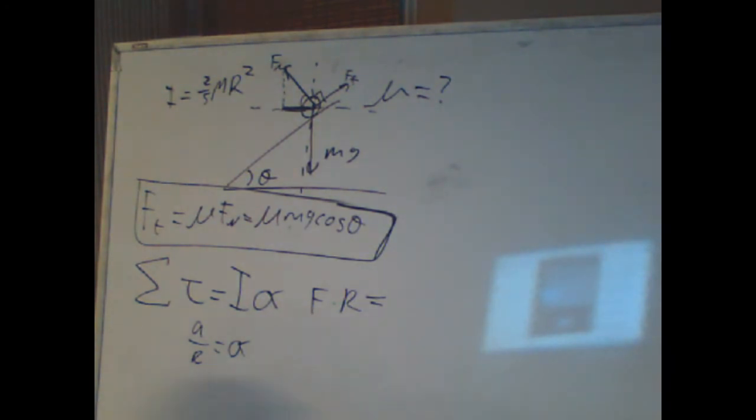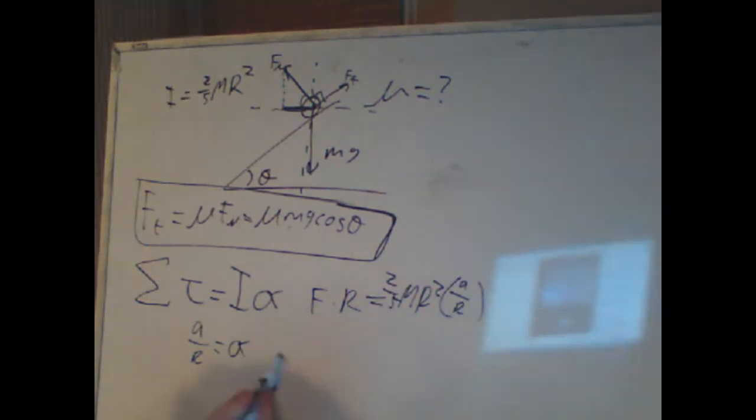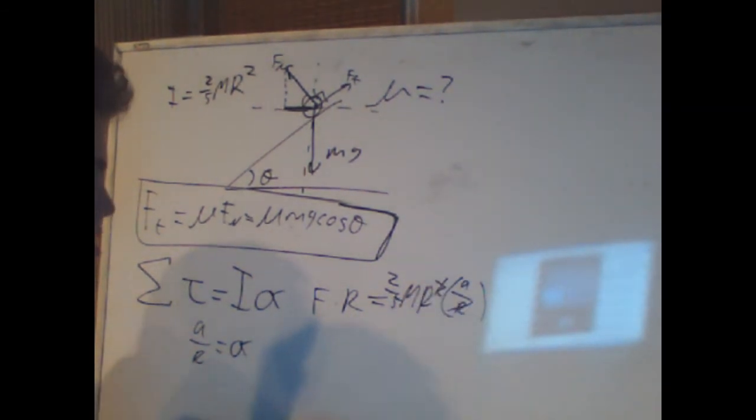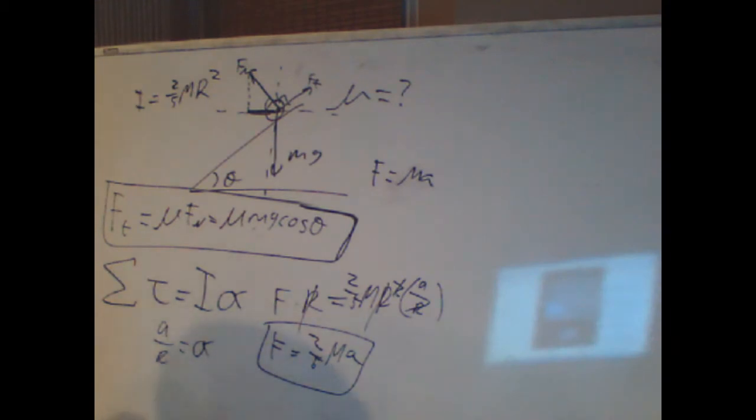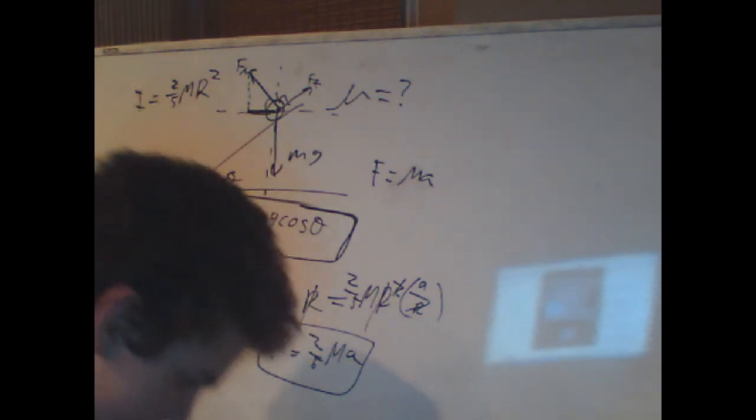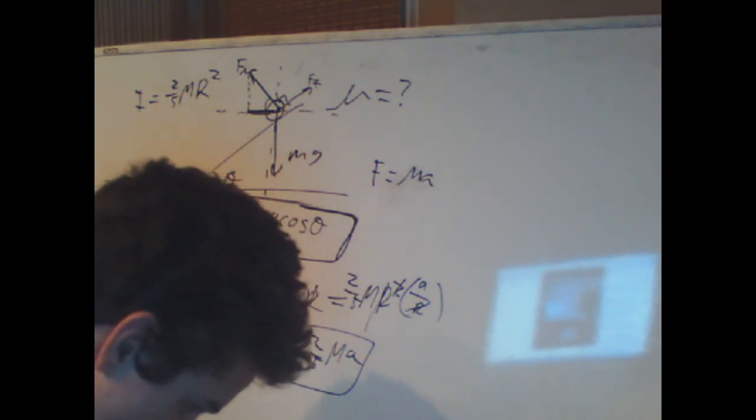So f times r equals 2/5 m r squared times a over r. Because of the commutative property, we can cancel these out. We can divide these out too. So f equals 2/5 m a. And this is what's going to be the key. Because we know f also equals m a here, we can simply substitute this in, right? But there's a problem we're missing here. That's just one force that we have. That's not all the forces that we need.